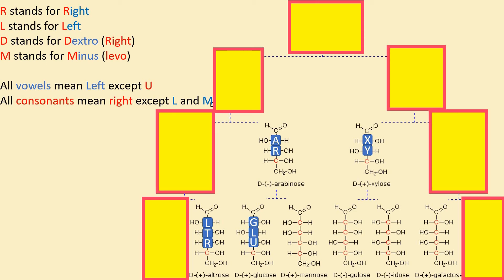For glucose, the first three letters are G, L, U. G is a consonant — OH on the right. L means left — OH on the left. U is the exceptional vowel — OH on the right. For mannose, the first three letters are M, A, N. M means minus or levo — OH on the left. A is a vowel — OH on the left. N is a consonant — OH on the right. For gulose, the first three letters are G, U, L. G is a consonant — OH on the right. U is the exceptional vowel — OH on the right. L means left — OH on the left.